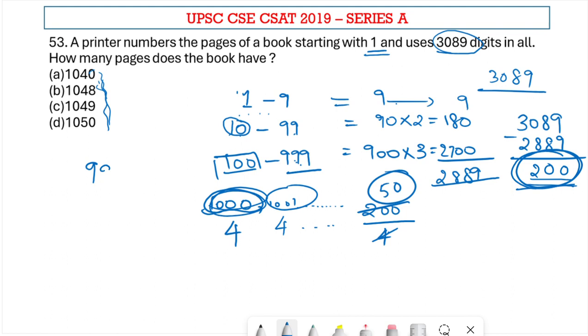So after 999, I have printed 50 numbers, which means 1049 is the answer. Therefore, option C is the right answer.